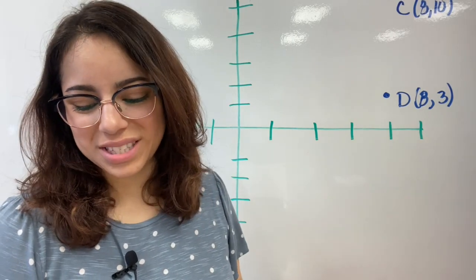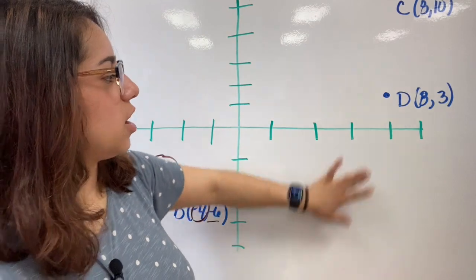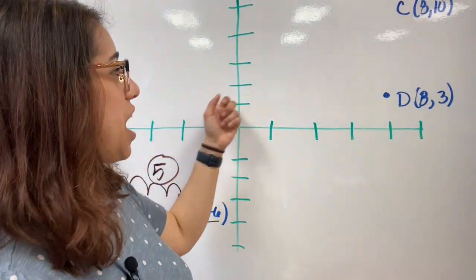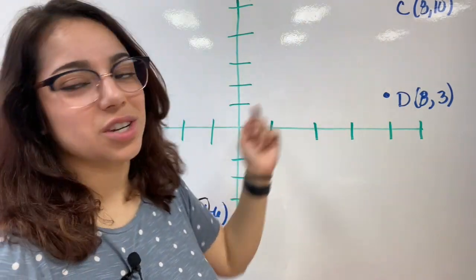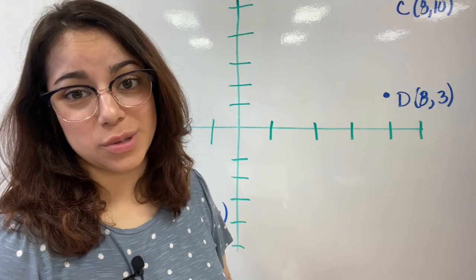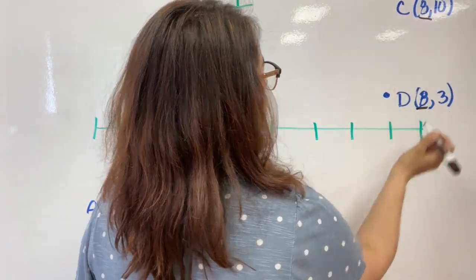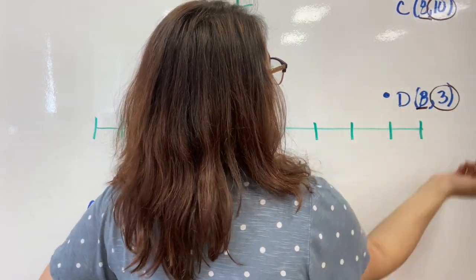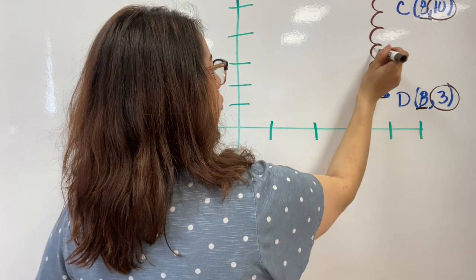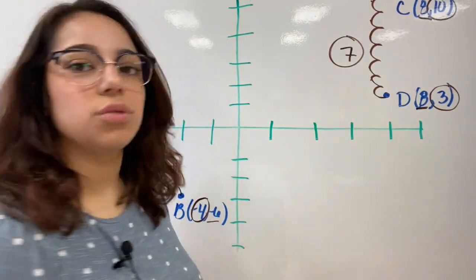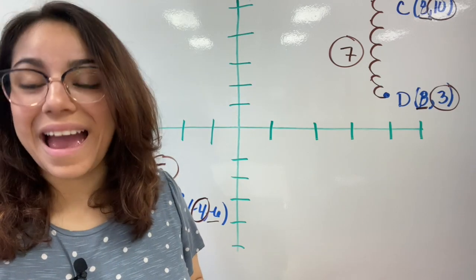Moving over to points C and D. The absolute value method only works well when they are on different sides — crossing the X axis or Y axis. Otherwise, I suggest counting your loops or subtracting your absolute values. The X is the same for C and D, so we're going to count our loops between 10 and 3: 1, 2, 3, 4, 5, 6, 7. Seven is the unit distance between points C and D. So the distance between C and D is seven units.